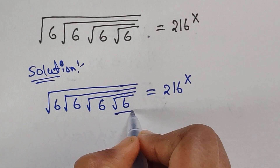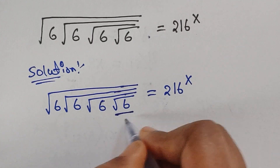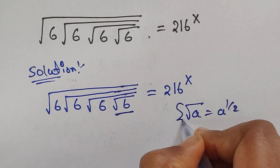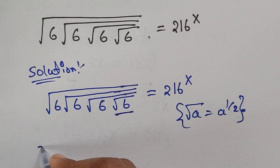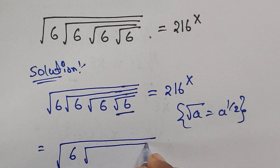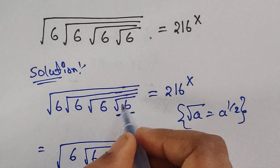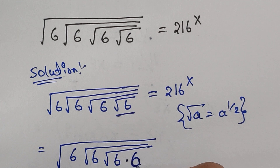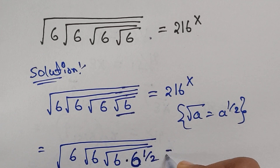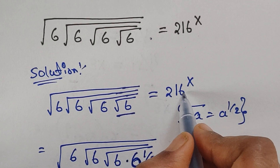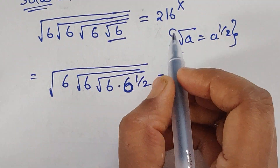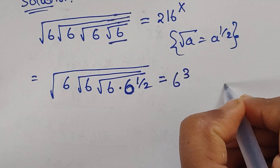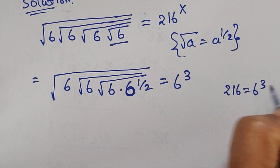First, we do these calculations. We can use this formula: square root of a equals a to the power of one by two. Using this formula, we write the nested square roots of 6. Also, 216 can be written as 6 to the power of 3, so 216 equals 6^3.